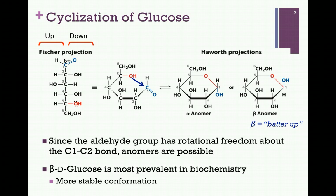Notice also the position of the OH groups as we switch between the Fischer and Haworth projections. If the OH is on the left in the Fischer projection, it will be up in the Haworth projection. If it's on the right in the Fischer, it will be down in the Haworth. This is because we, in essence, rotated the linear molecule 90 degrees to the right and then cyclized it.